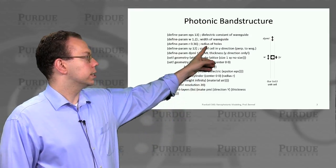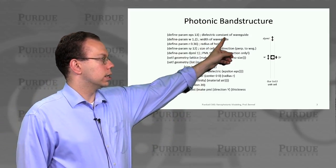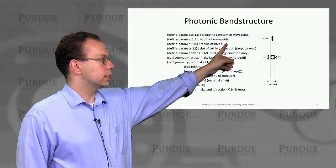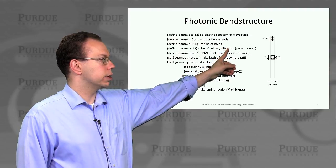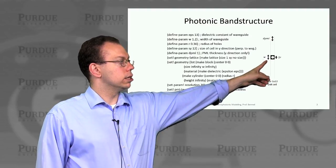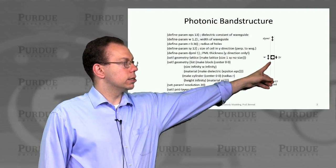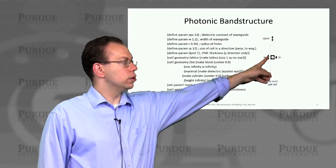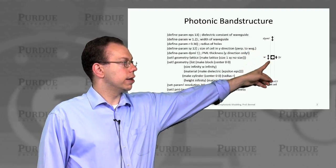And so what you see here is actually a definition of the geometry and materials that would go into this waveguide. You can kind of see here, this is the base element which has a certain width w, which is defined here. And then we have a hole radius